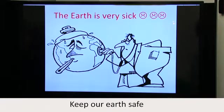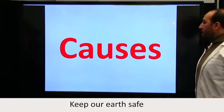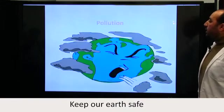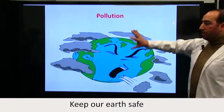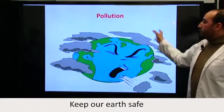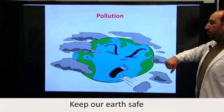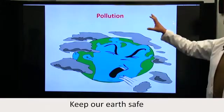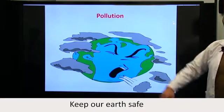We're going to see the causes of the sickness or illness of the earth. The first one is pollution. As you can see here, there is a globe in its coffin and it is surrounded by smoke. This doesn't necessarily mean that smoke is the only cause of pollution — there are other causes of pollution.